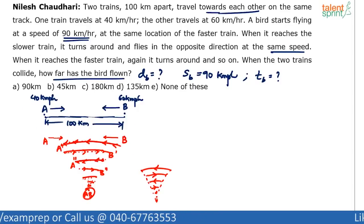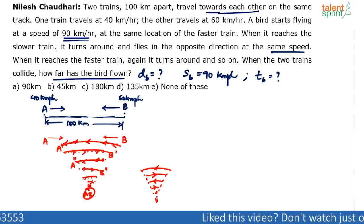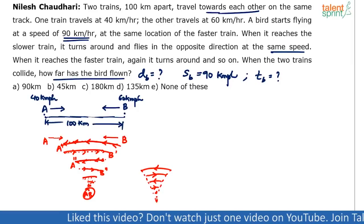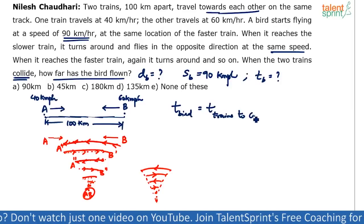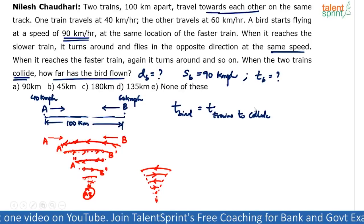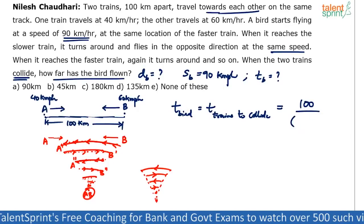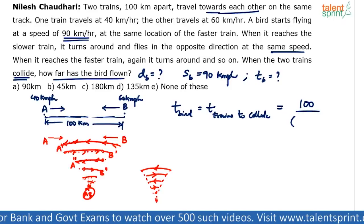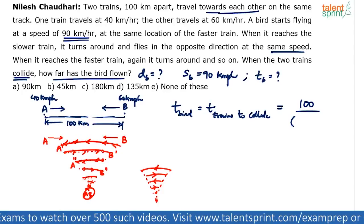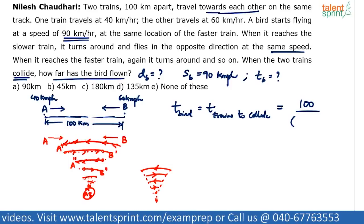This becomes a relative speed problem. The two trains are moving in opposite directions, so their relative speed is the sum of their speeds: 40 plus 60 equals 100 kilometers per hour. The total distance they need to cover together is 100 kilometers. Time equals distance divided by speed, so the time taken for the trains to collide is 100 divided by 100, which equals 1 hour.